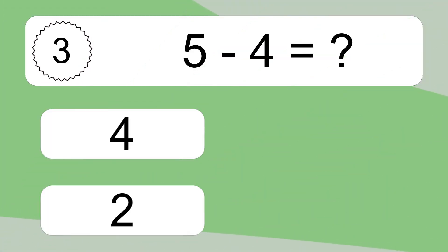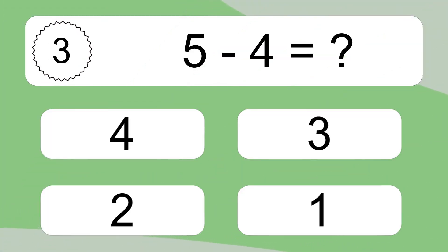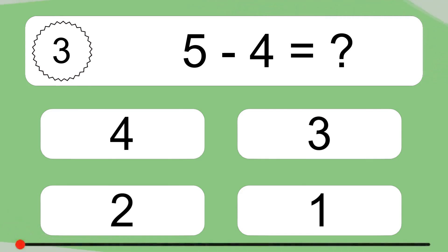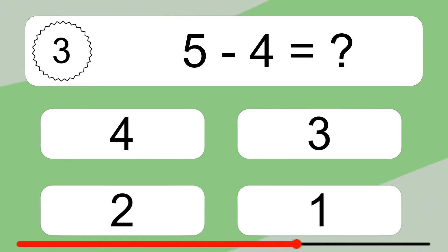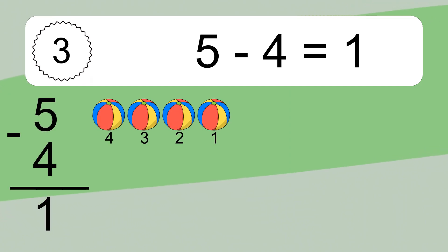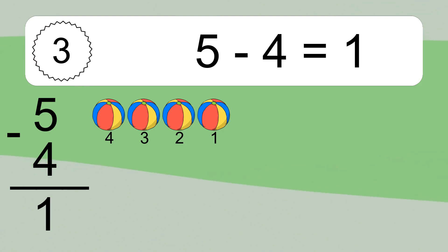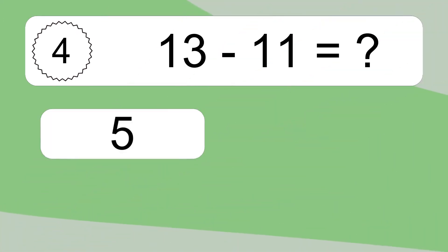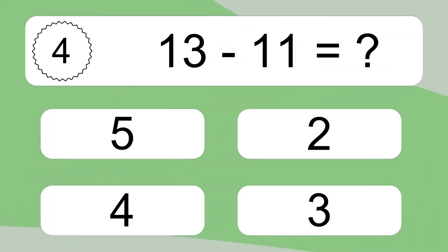5 minus 4 equals what? 5 minus 4 equals 1. Let's count it: 4, 3, 2, 1.